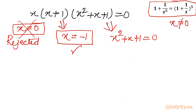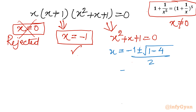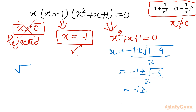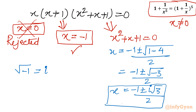Applying the quadratic formula: x = (−b ± √(b² − 4ac)) / 2a gives x = (−1 ± √(1 − 4)) / 2 = (−1 ± √(−3)) / 2. Since √(−1) = i, this becomes x = (−1 ± i√3) / 2. These two complex values are recognized as omega (ω) and omega squared (ω²), the non-real cube roots of unity.